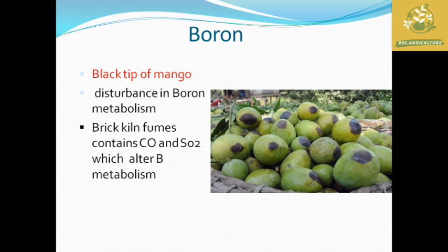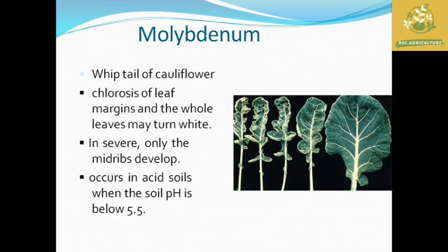Boron deficiency in mango causes black tip of mango due to disturbance in boron metabolism. Fumes of carbon monoxide and sulfur dioxide alter boron metabolism in the crop, reducing economic value and quality.